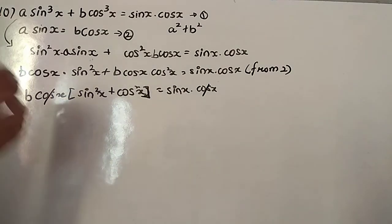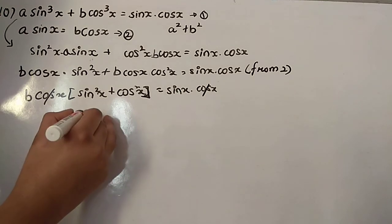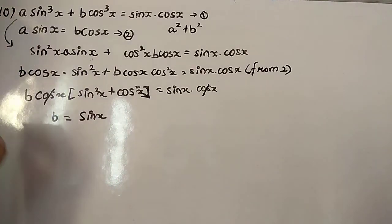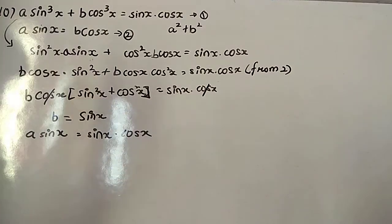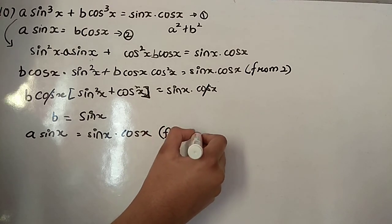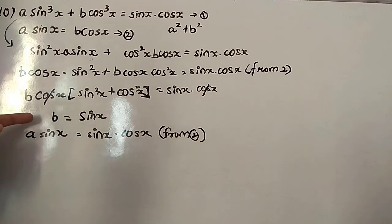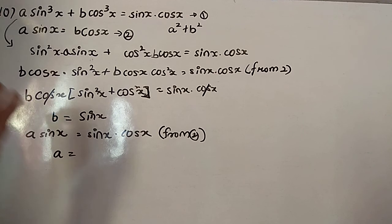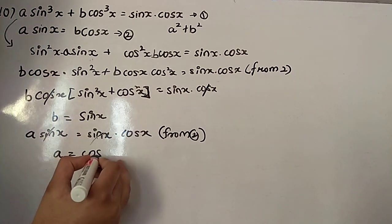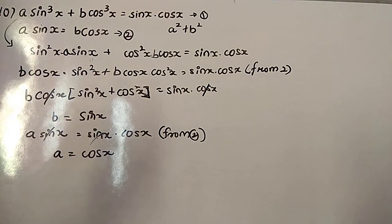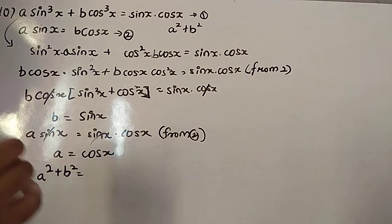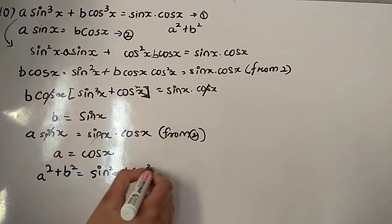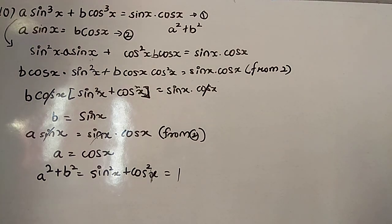Since sin²θ + cos²θ = 1, we get b = sin x. Then from equation 2, a·sin x = b·cos x, so a = cos x. Therefore a² + b² = cos²x + sin²x = 1.